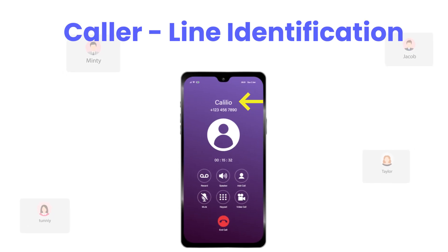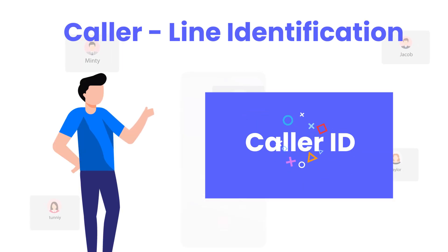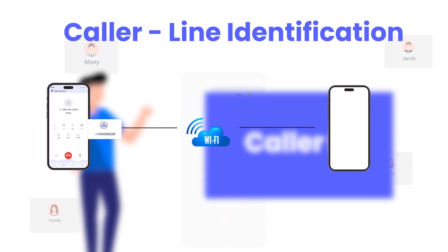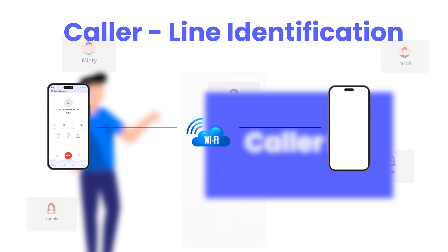Caller Line Identification displays the caller number. This small feature plays a significant role in our communication. When you make a call, your phone sends a signal through your service provider's network.